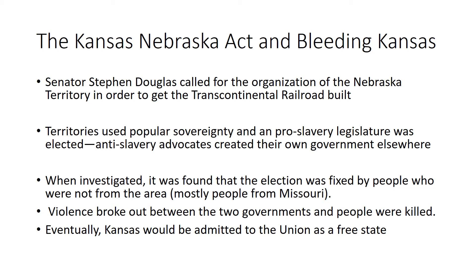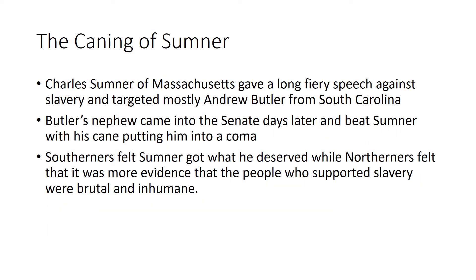Eventually, once everything was sorted out, Kansas was admitted to the Union as a free state, even though people had died over this issue. Not only was there violence between state governments, but there was also violence within Congress itself. An example of this is the caning of Sumner.